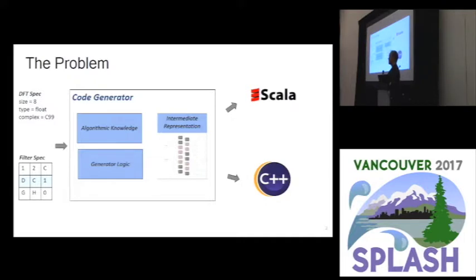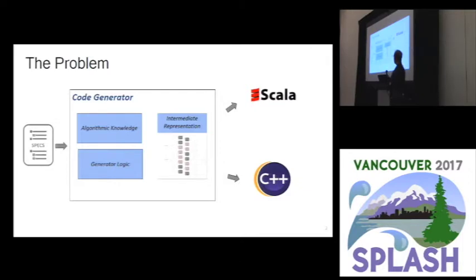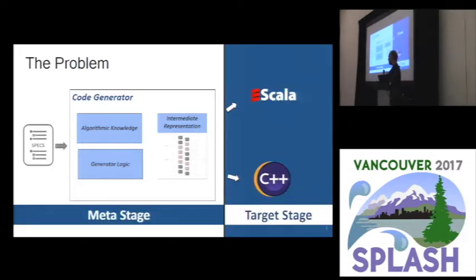Our input is just a spec — for example, for a discrete Fourier transform, it's the input size or the data format we want to use, or how we want to store complex numbers. Whereas for filters, it might be the symmetry of the filter, the size of the filter, and so on. So it's a very limited input spec. Throughout the rest of the talk, I will refer to everything surrounding the code generator as the meta stage, and everything dealing with the output that generates code as the target stage.